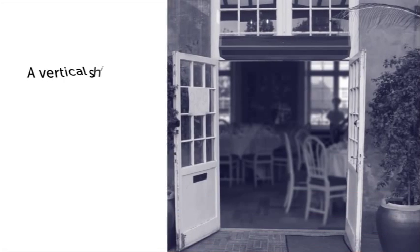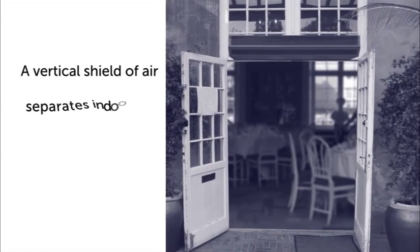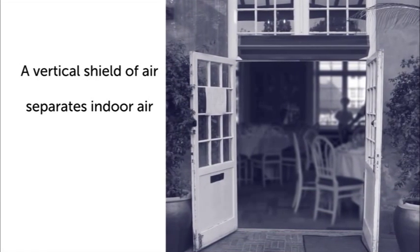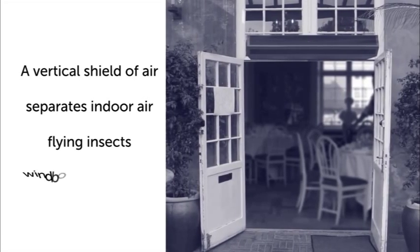An air curtain is a vertical shield of air that separates climate-controlled indoor air from outside temperatures, flying insects, and wind-worn pollutants.